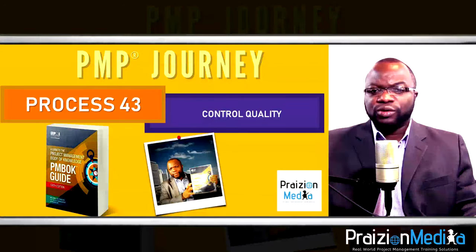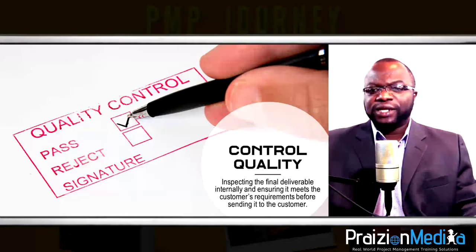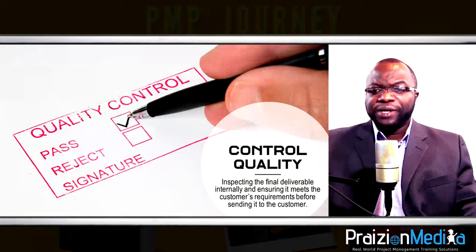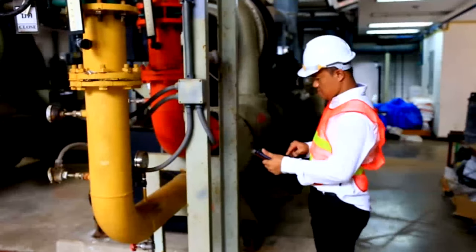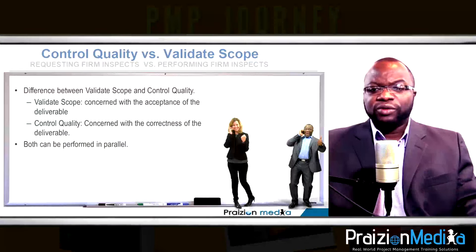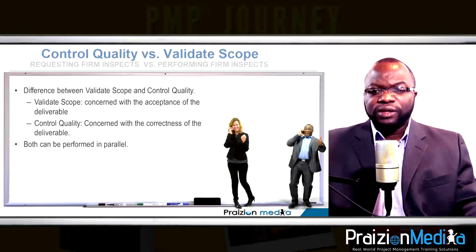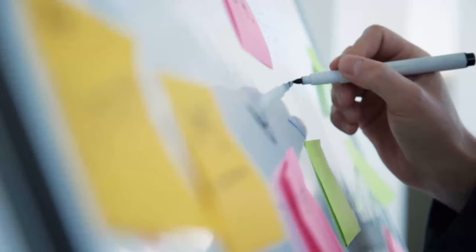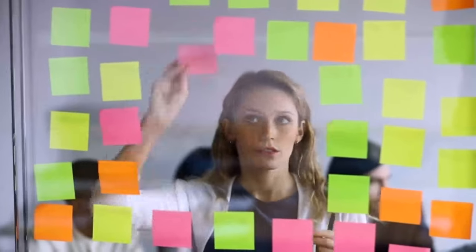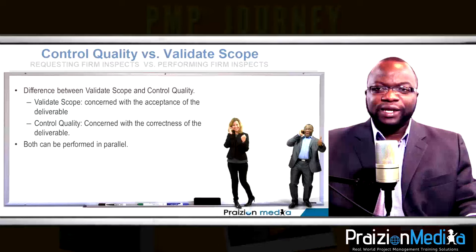Process 43: Control quality. The project manager and team ensure that the deliverable produced is fit for use and conforms to requirements through inspection. The PM must check every way possible that the deliverable is good to go to the customer. Note that validate scope (customer checks) and control quality (internal check) can actually be done in tandem — in parallel in incremental chunks — especially considering the agile approach discussed in the PMBOK Guide.